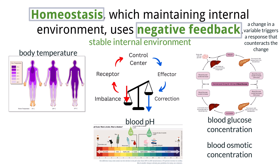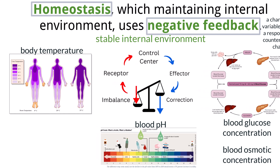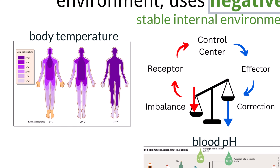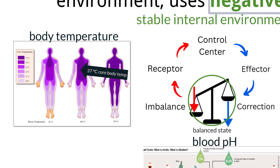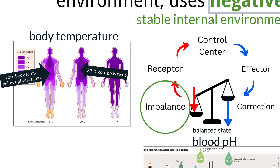Think of homeostasis as a balance. The human body should be maintained at about 37 degrees Celsius — this is the balanced state. However, if the body temperature becomes imbalanced or moves below the optimal range, a series of steps will occur to correct the imbalance.